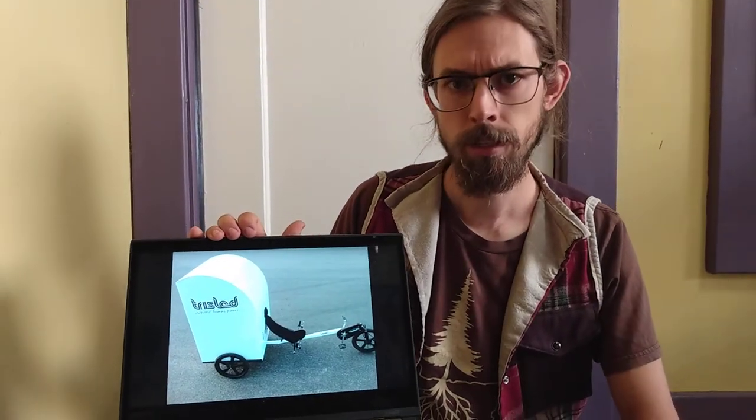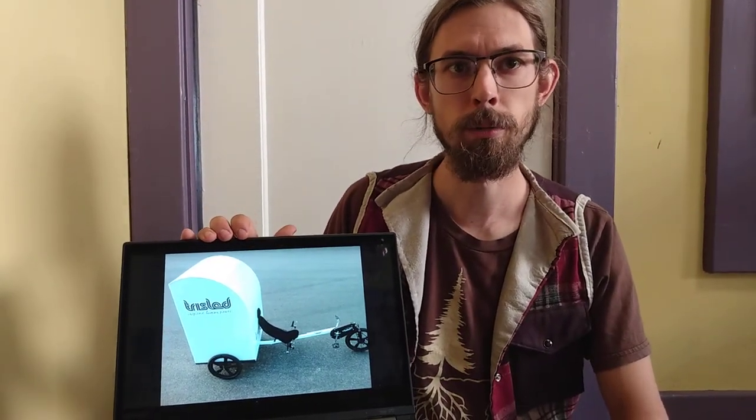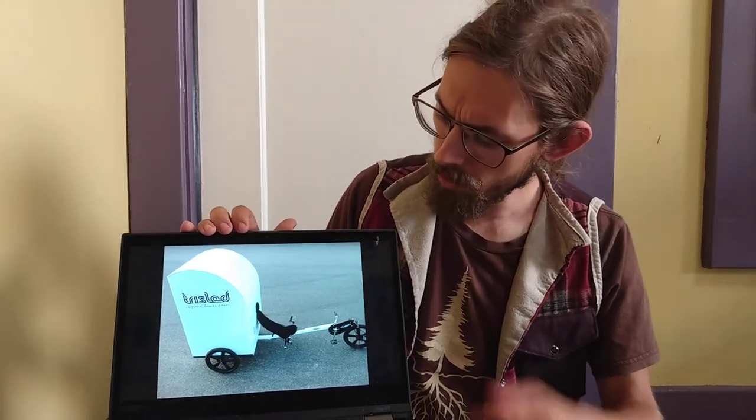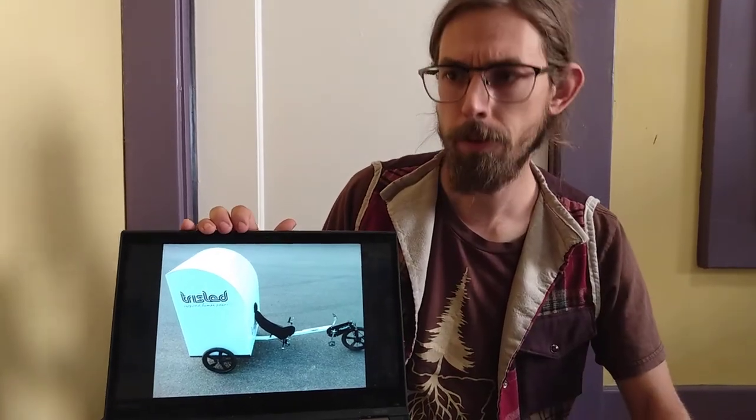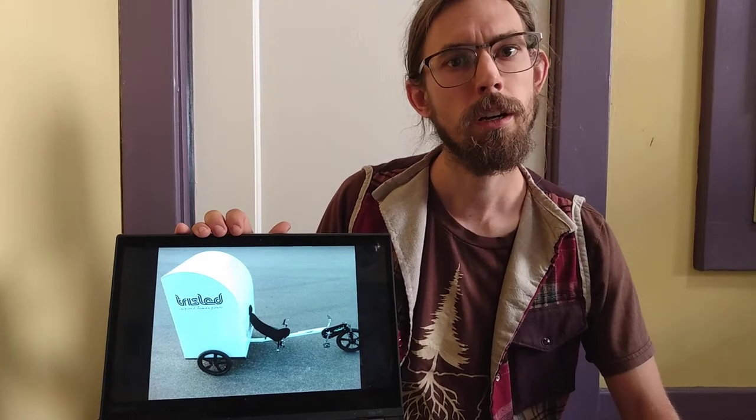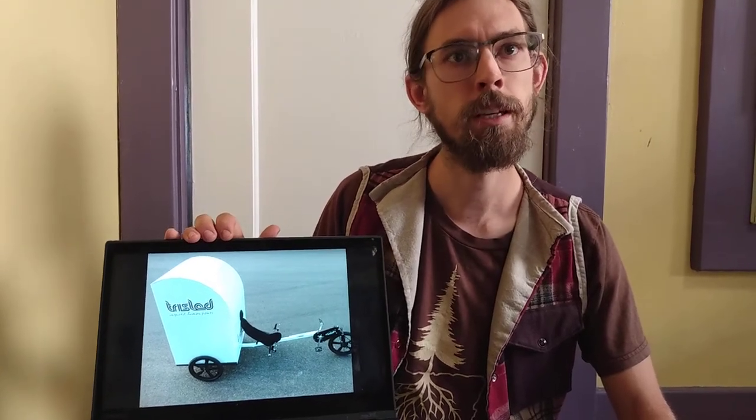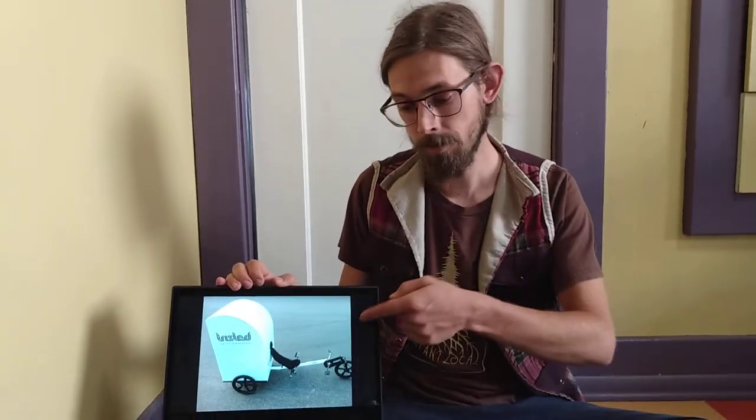Trisled in Australia also makes some interesting cargo bikes and trikes. This one, I believe, was a prototype for their current cargo trike design, which wound up being an upright trike because they wanted to go with something that's a little more familiar to riders. But they still offer this as a sort of semi-custom build.